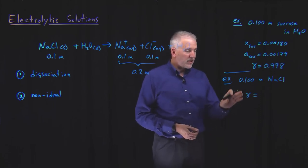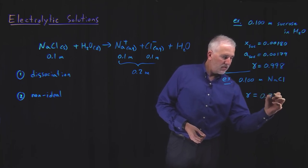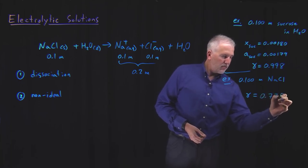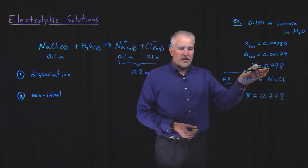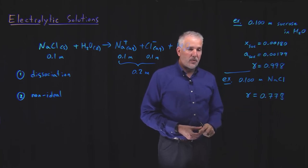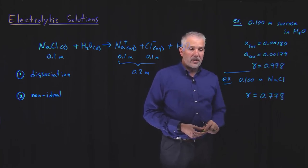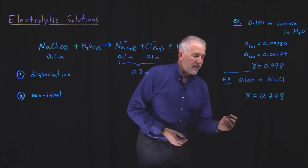The activity coefficient in a 0.1 molal sodium chloride solution is 0.778. So if one is 100% ideal, fully ideal, this is an activity that's 22 or 23% lower than we'd expect based on an ideal solution. So it's deviating quite a bit from ideality.